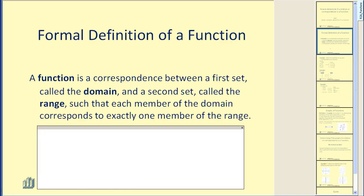Let's take a look at the definition of a function. The formal definition: a function is a correspondence between a first set, called the domain, and the second set, called the range, such that each member of the domain corresponds to exactly one member of the range.